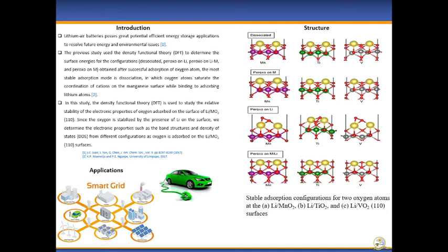Li-air batteries are among the most promising candidates for electric vehicles and smart grids because they can store a large amount of energy density. Here are the simple configurations obtained after successful absorption of oxygen on the Li-MO2.